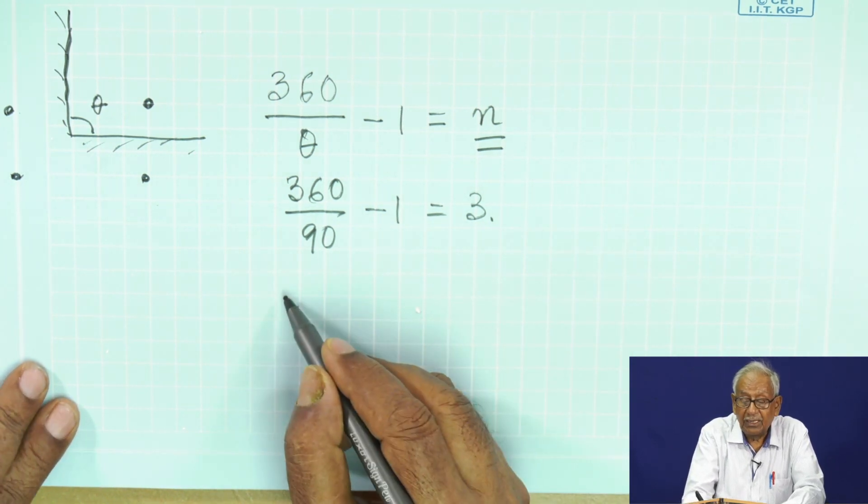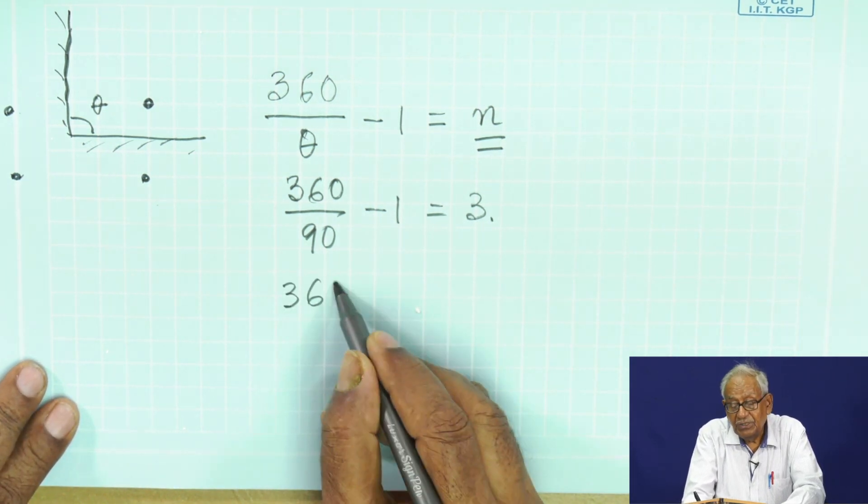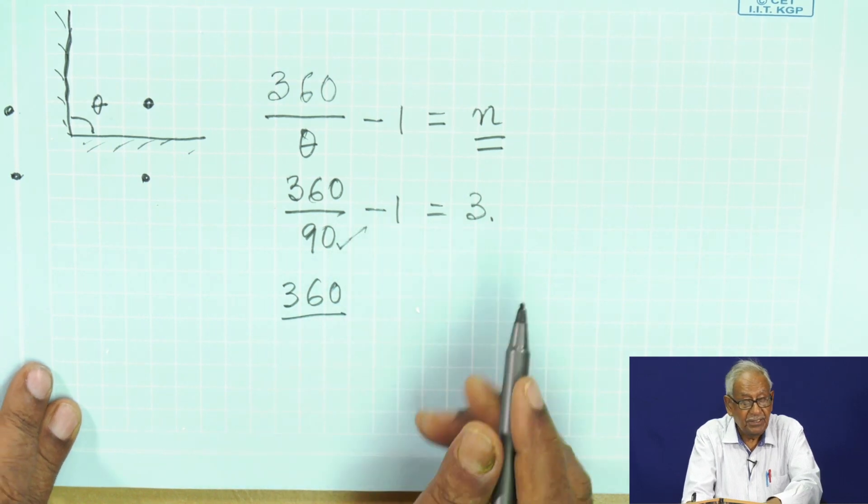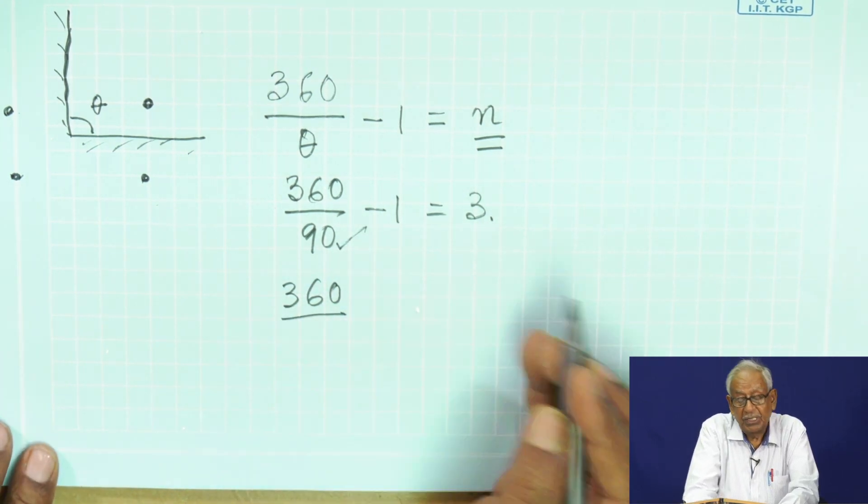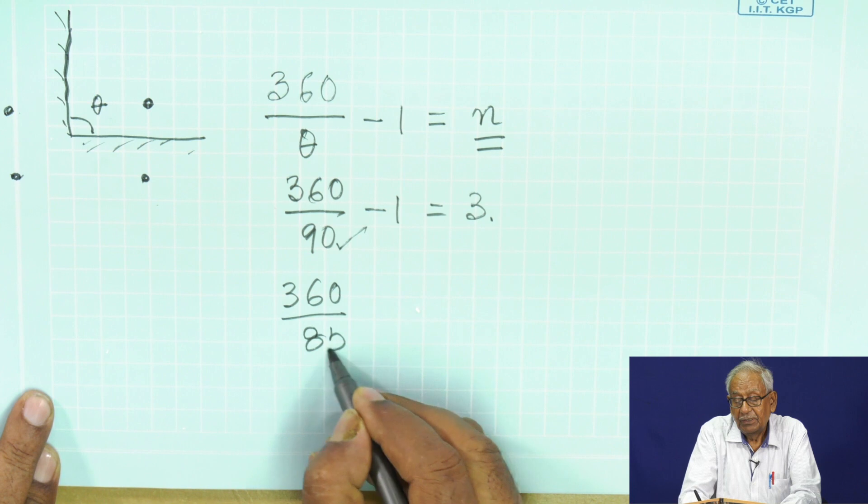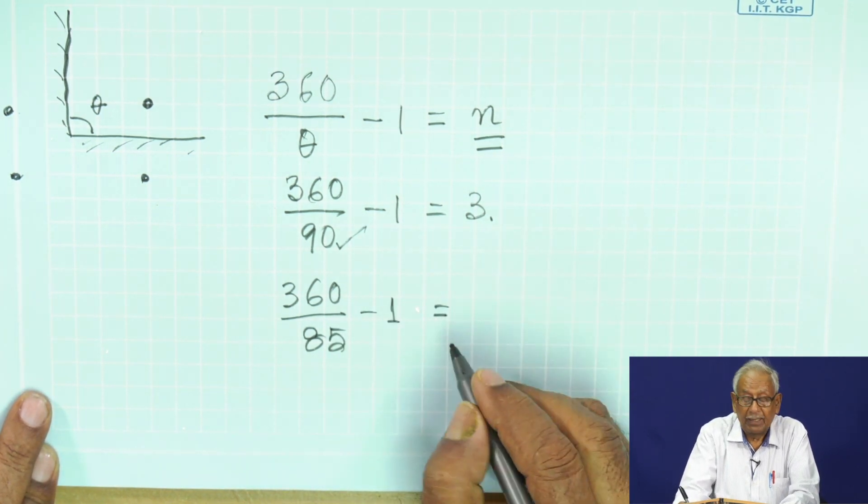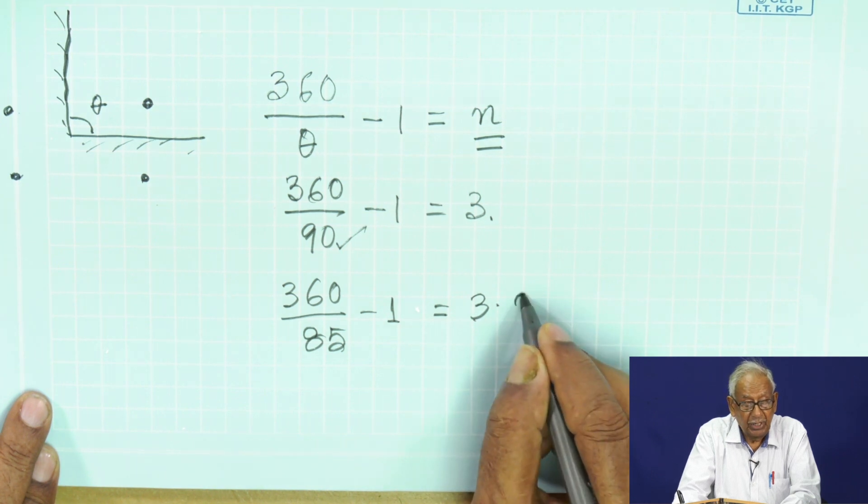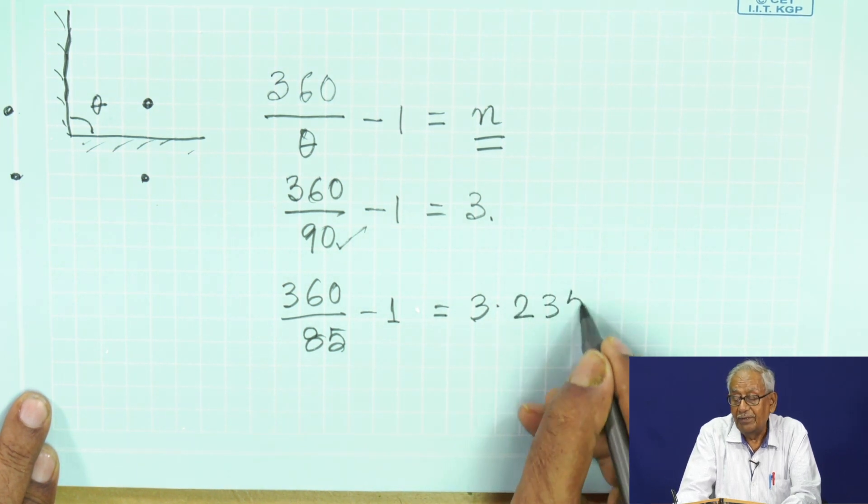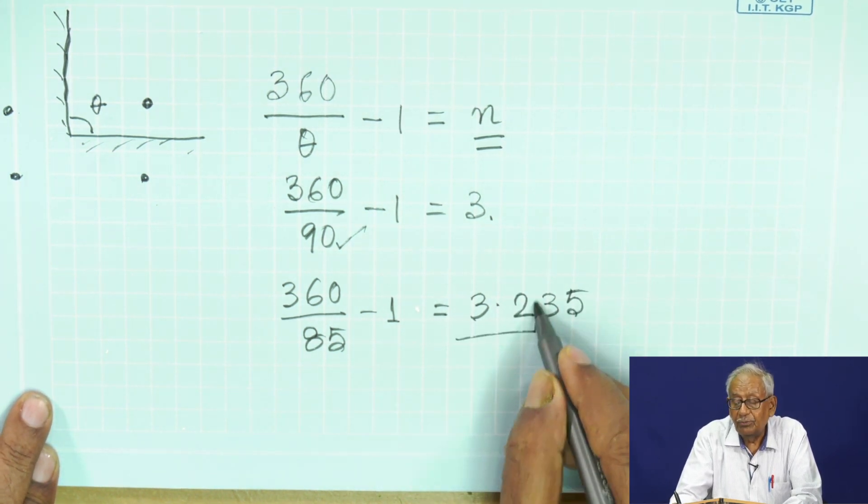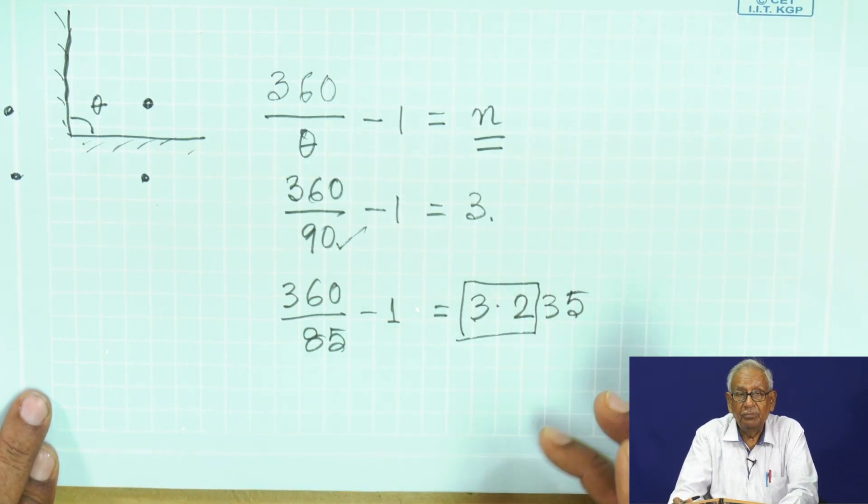Now the question is, if I change this angle—instead of 90, if I make it say 85—then 360 divided by 85 minus 1 gives a value of 3.235. Is it possible that we shall see 3 full images and 0.2 of an image? No, it is not possible.